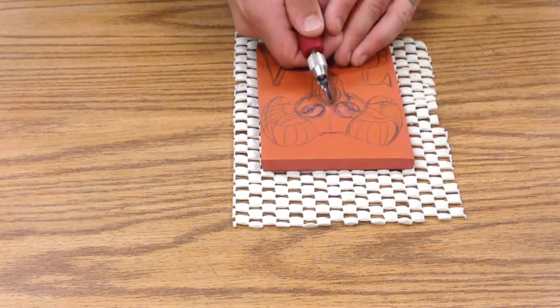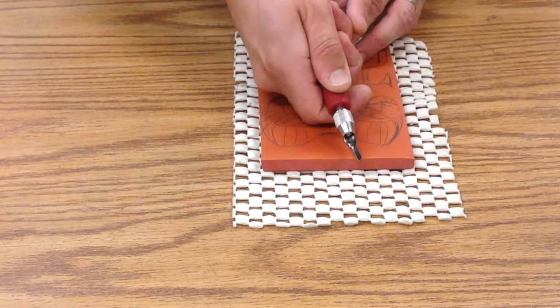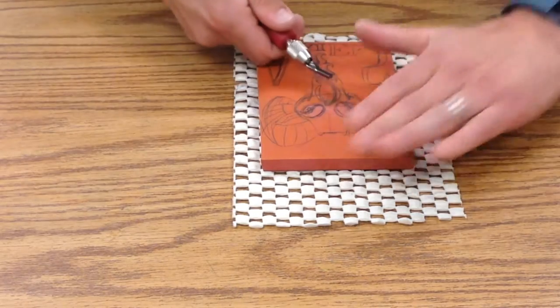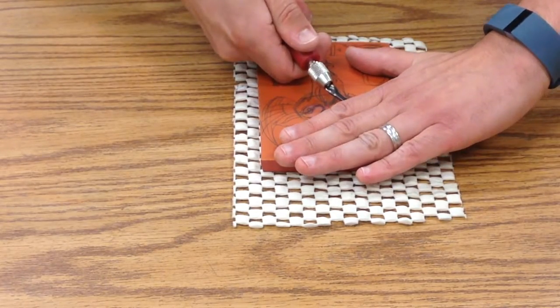So I'll hold it like this. I'll always cut away from myself. I never want to go like this. I never want to put my other hand in the way and accidentally cut there.